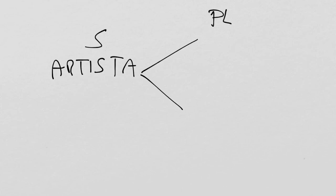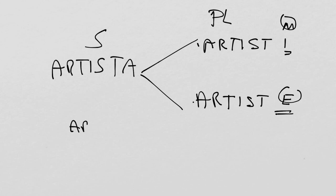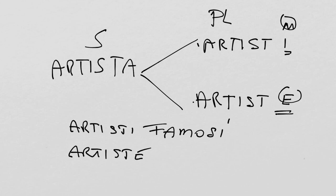Things change when we go to the plural, but fortunately it is regular. The masculine plural is artisti, and the feminine plural is artiste — there should be no surprise here. We're going to have artisti famosi, and artiste famose.